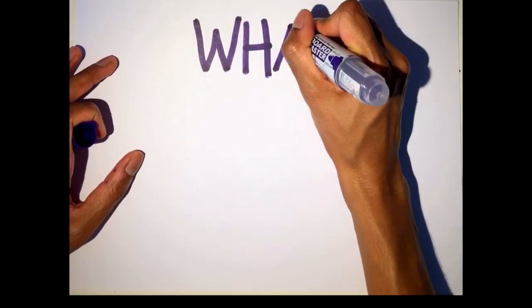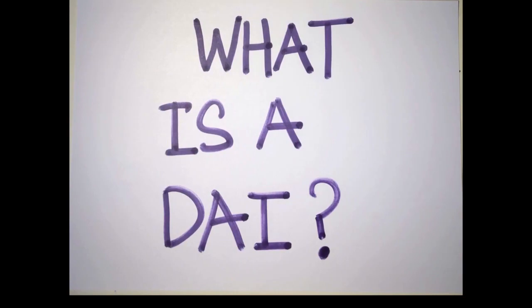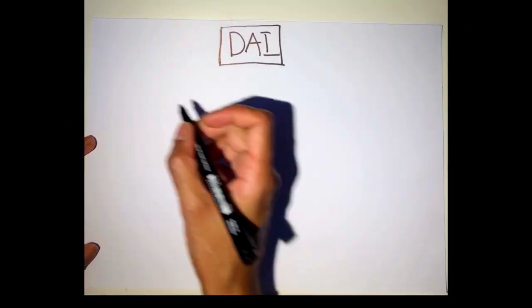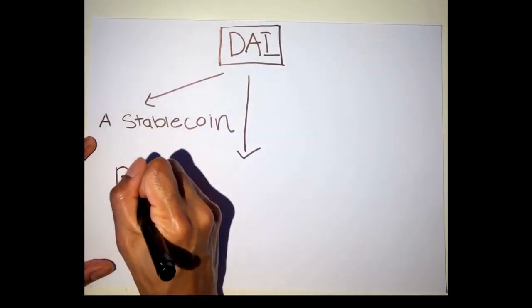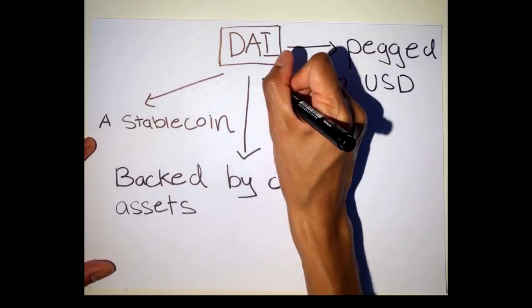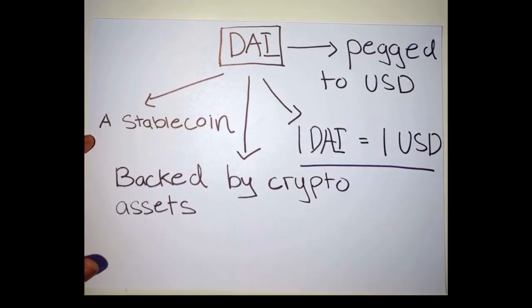The first thing is to understand what a DAI is. So DAI is a stablecoin that is backed by crypto assets. It is pegged to the US dollar. So one DAI is always one USD.